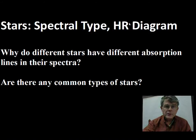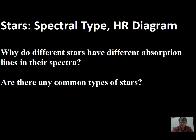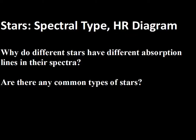This video will concentrate on the Hertzsprung-Russell diagram, the HR diagram, and talk about temperatures of stars, elements in stars, and luminosity of stars. We might ask ourselves why different stars have different darkness of absorption lines in their spectra, and in some cases even different wavelengths for the absorption lines. What causes that difference? And are there any common types of stars where a large percentage of stars in the universe might fall in a group? Those are some of the questions we hope to answer.